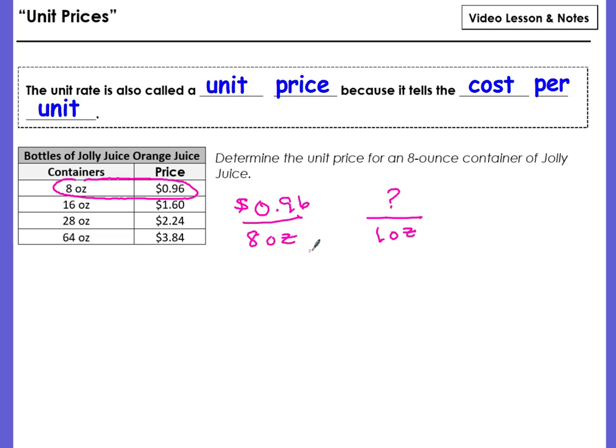So just like we do with unit rates, you're going to go from 8 to 1. So we're going to divide by 8. Do the same thing in your numerator, and we're going to have to do a little bit of math.